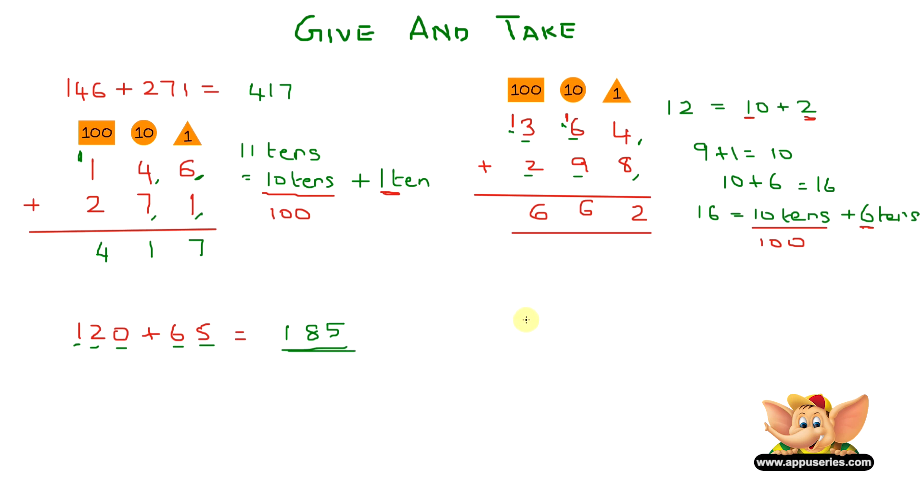Let's try another one. There's 374 plus 117 equals? So there's 4 plus 7 equals 11. Now because we have 11 we carry over 1. Now there's 7 plus 1 plus 1 equals 9. 3 plus 1 equals 4. So the answer here is 491.